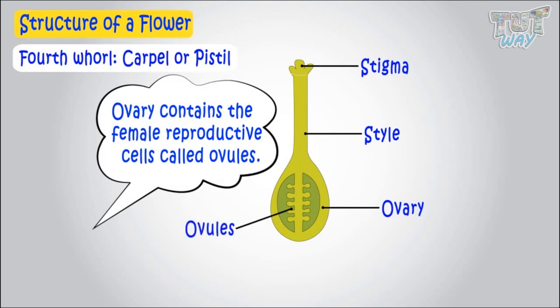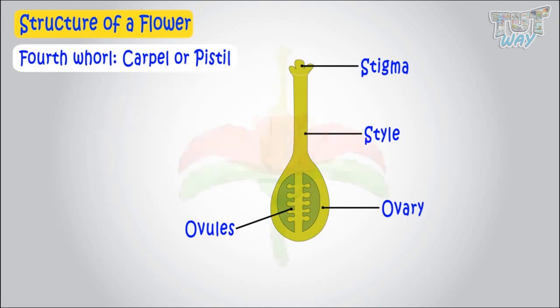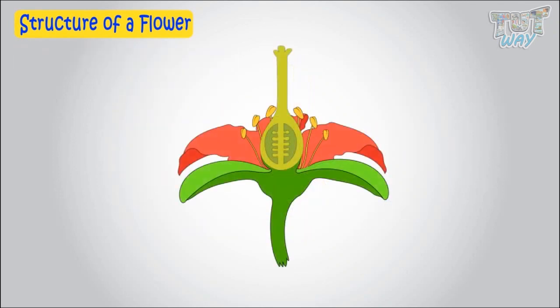So kids, now let's revise the structure of a flower. This is pedicel, which is a green color stalk. Then this broader part is a receptacle.